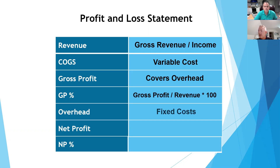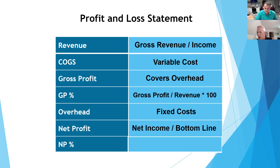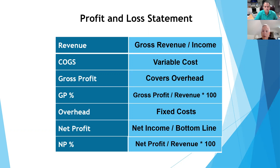Then we get overhead — your fixed costs. And after you take out all those costs, your variable costs and your fixed costs, you basically get your net income, or your bottom line, and what that percentage is — how profitable you are as a percentage of revenue.